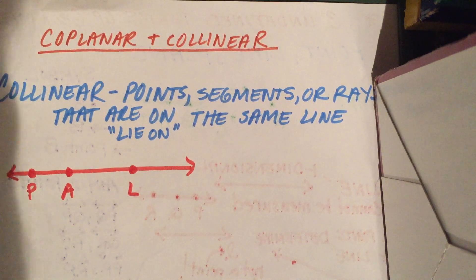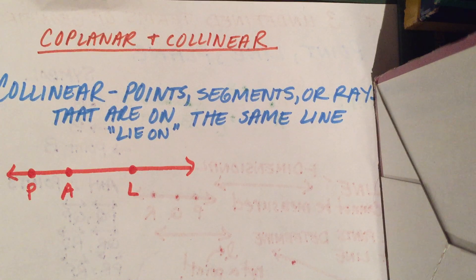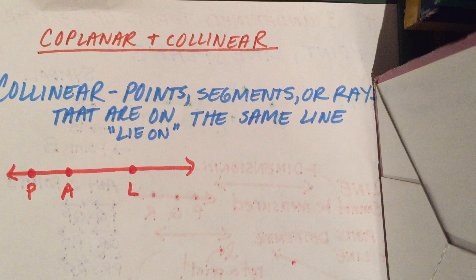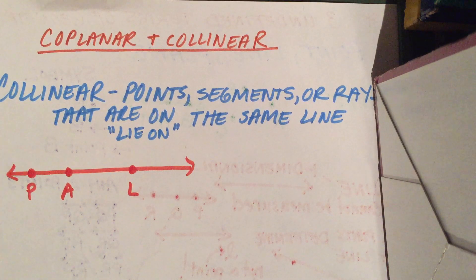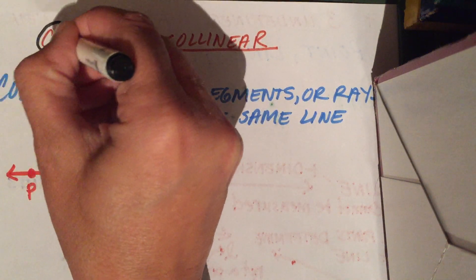Okay, so now we're going to look at coplanar and collinear. Coplanar and collinear are two terms that talk about the location of certain items. The key thing you're going to look for here is in geometry, when you look at vocabulary, you can pick out root words that will help you determine the meaning of a term even if you're not sure. So let's take coplanar and collinear.